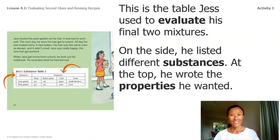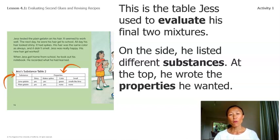This is the table Jess used to evaluate his final two mixtures. On the side he listed different substances. At the top he wrote the properties he wanted. Today we're going to be doing the same thing Jess did — we'll use a table to help us decide whether our mixtures have certain properties based on the evidence from our tests.